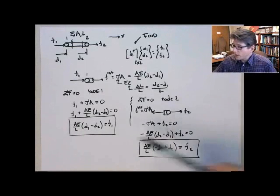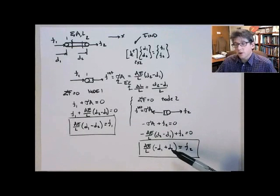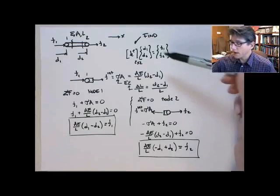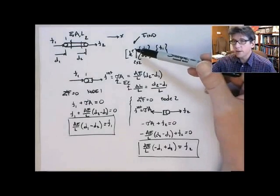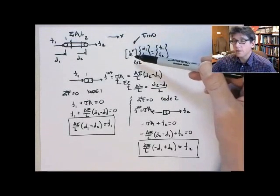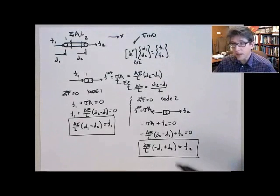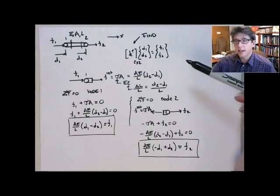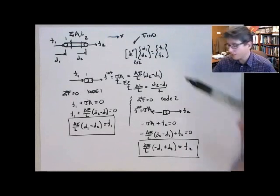So we have two equations and two nodal unknowns, right? The two nodal unknowns are D1 and D2. So the two equations, each equation is going to constitute a row in the stiffness matrix. And we already have this, kind of this KD equals F form.